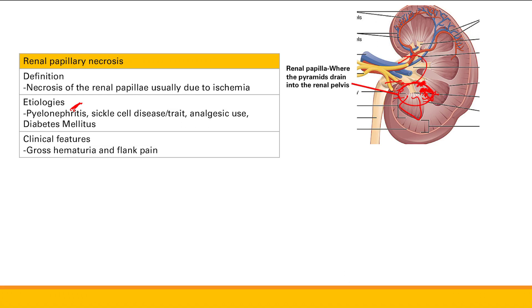The clinical features of renal papillary necrosis: damage and death of cells right in front of the ureter causes bleeding directly into the ureter, resulting in gross hematuria and flank pain. So to review our intrinsic kidney problems: acute tubular necrosis, acute interstitial nephritis, and renal papillary necrosis.